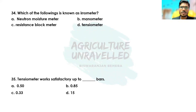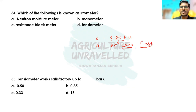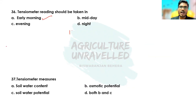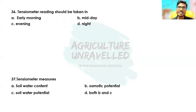The range of tensiometer reading is 0 to 0.85 bar, generally expressed in centibar — so 0 to 85 centibar. Generally, for decreasing 1 centibar reading, 1 mm of irrigation is applied. For example, if the tensiometer reading is 35 centibar, it means the soil is drier and we have to apply 35 mm of irrigation water to recharge the root zone. Also remember: 1 degree change in temperature affects the tensiometer reading by 8 millibar.